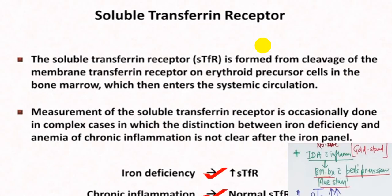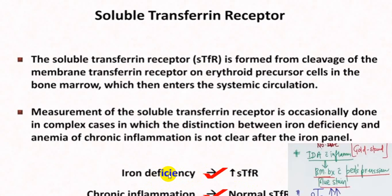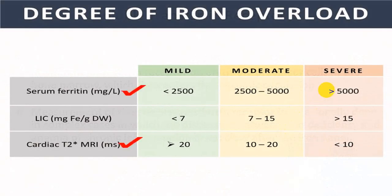Soluble transferrin receptor is another test — not commonly ordered — that is elevated in iron deficiency, while it is normal in chronic inflammation or anemia of chronic disease. This is very important: if you still have difficulty differentiating whether anemia is due to iron deficiency or chronic inflammation, and if soluble transferrin receptor level is elevated, it suggests iron deficiency anemia — possibly combined with anemia of chronic inflammation.